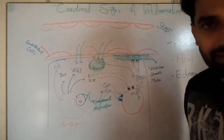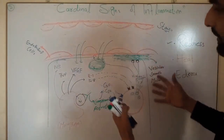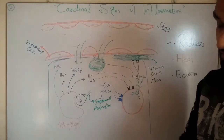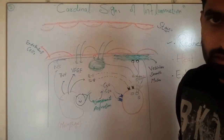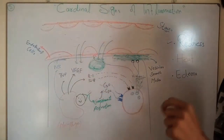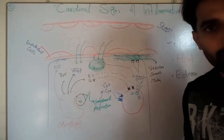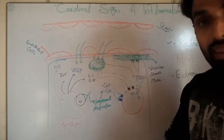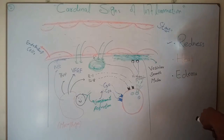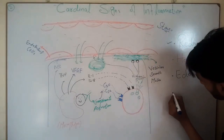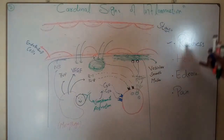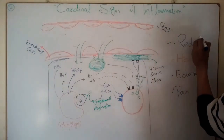The fourth sign is pain. Other mediators like prostaglandins — released via the phospholipase A pathway, to be discussed in the next videos — are responsible for activating pain nerves. So the fourth cardinal sign of inflammation is pain.